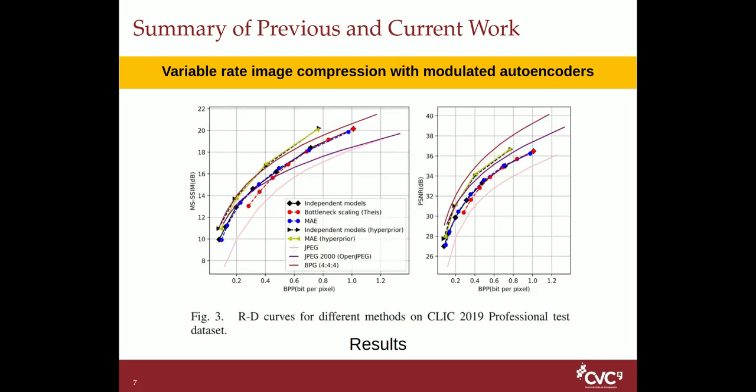Our results are almost the same as independent models for variable rate, which can be viewed as an upper bound, and better than Thys's method, which we call bottleneck scaling here. Note that our idea can be expanded easily to other deep image compression methods for realizing variable rate.